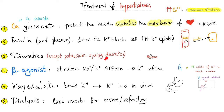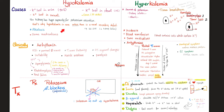All diuretics can treat hyperkalemia, except potassium-sparing diuretics. Beta agonists work because they stimulate the sodium-potassium pump. Kayexalate is a potassium-binding resin taken by mouth — it goes to the gut, binds potassium, and together they leave through the stool, decreasing the risk of hyperkalemia. When everything fails — dialysis — to remove potassium. Here is a summary slide: hypokalemia causes, clinical signs and symptoms, and treatment versus hyperkalemia. Treatment for hyperkalemia: calcium gluconate, insulin, diuretics, beta agonists, kayexalate, dialysis.